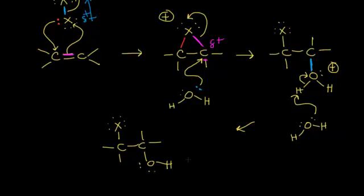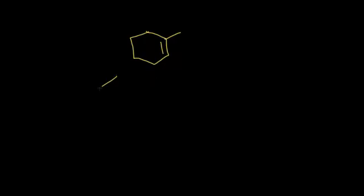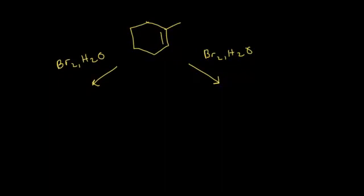Let's do an example to examine the stereochemistry more closely. Starting with a cyclohexene-type alkene, we'll add bromine and water — Br2 and H2O — and think about this in two different ways. On the left, we'll consider the formation of the bromonium ion.